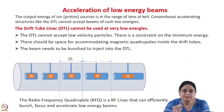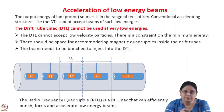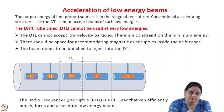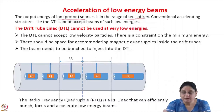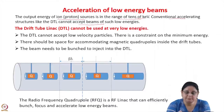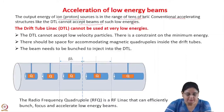Before acceleration, the ions or charged particles have to be produced in an ion source. The output energy of ion sources, or proton sources, is in the range of tens of kV, so the output energy is quite small. Conventional accelerating structures like the drift tube linac cannot accept beams at such low energies. In the DTL, it cannot be used for very low energies because there is a constraint on the minimum energy due to the dimensions of the drift tube.